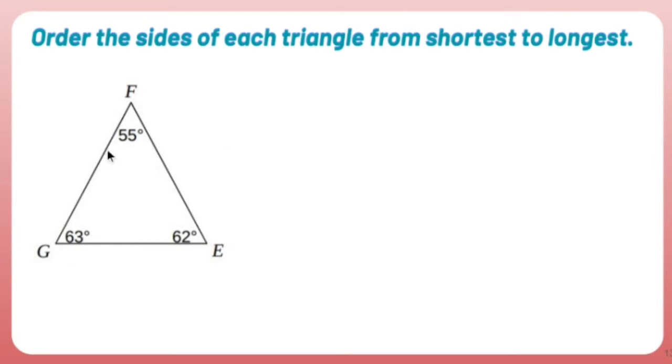What I can do is I can find the shortest angle, which is 55. And whatever the shortest angle is, the side opposite that is going to be the shortest side. So since my smallest angle is angle F, the shortest side is going to be side GE.